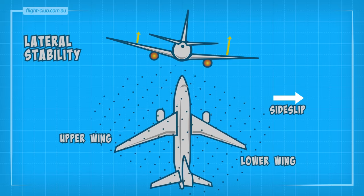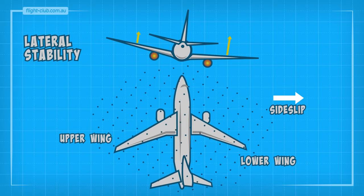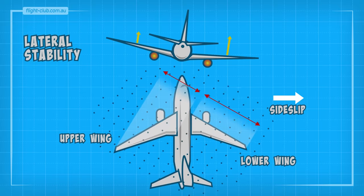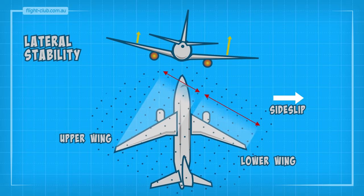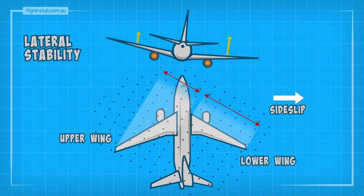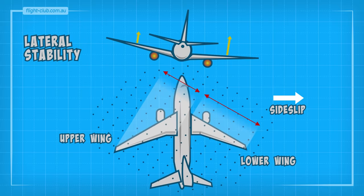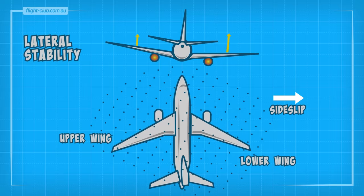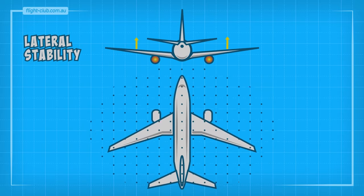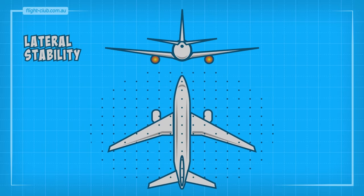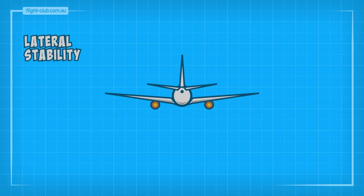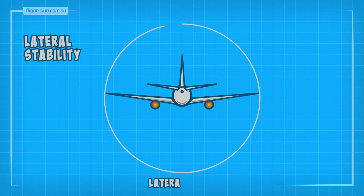This is because, in a sideslip, the lower wing presents more of its wingspan to the relative airflow than the upper wing. As the lower wing generates more lift, it recovers the aeroplane back to the wings-level attitude. When the aeroplane recovers without any pilot input in the lateral plane, this is called lateral stability.